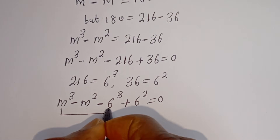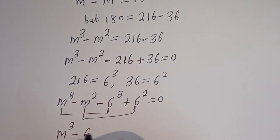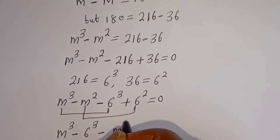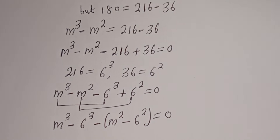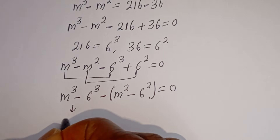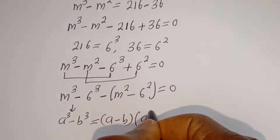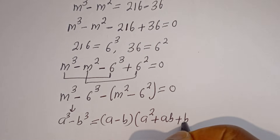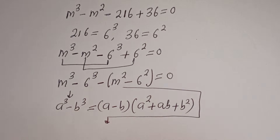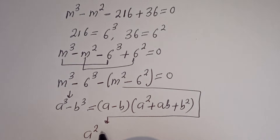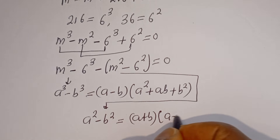Then here, let's pair M³ with negative 6³, and negative M² with positive 6². Take note that A³ minus B³ equals (A minus B)(A² + AB + B²), and A² minus B² equals (A + B)(A minus B).